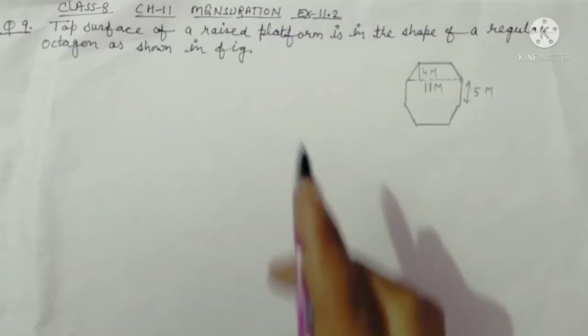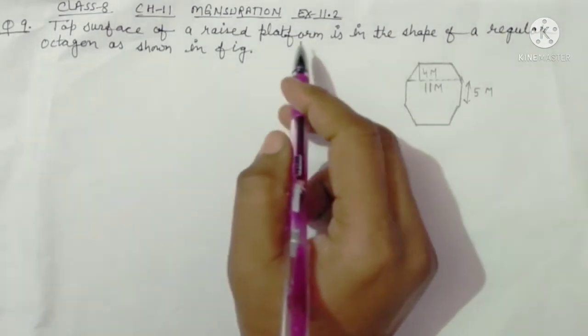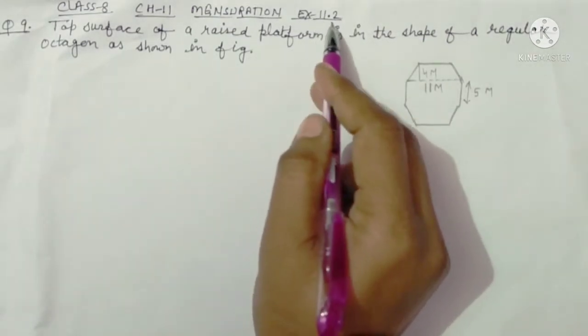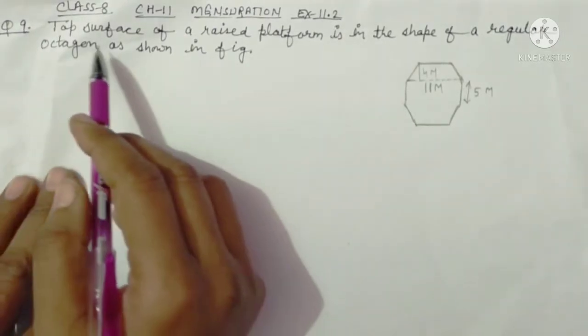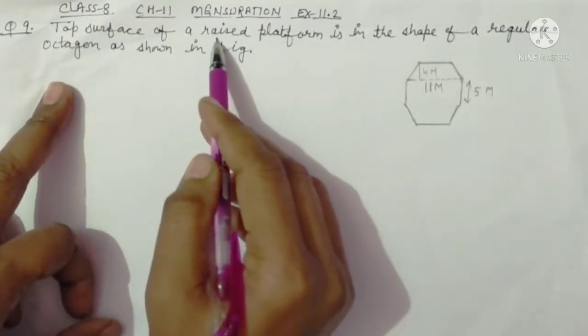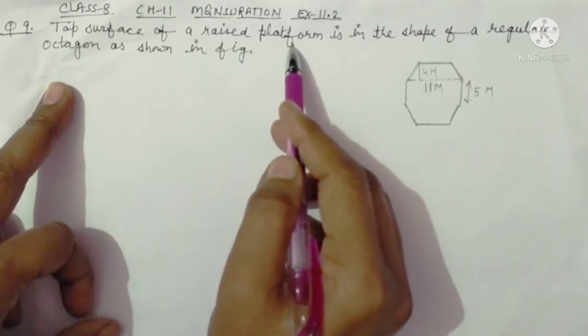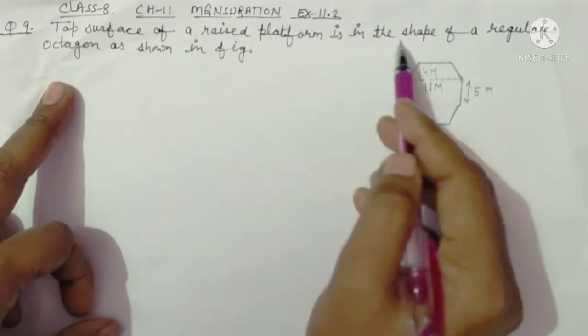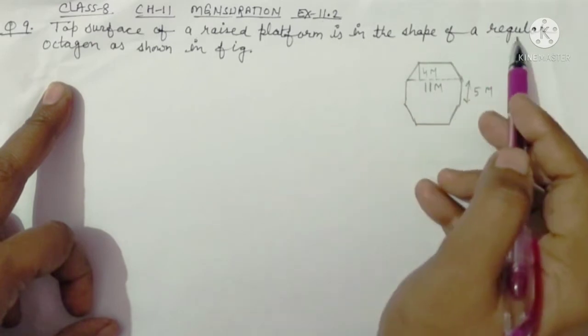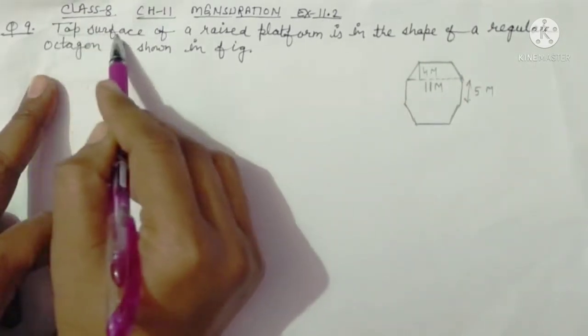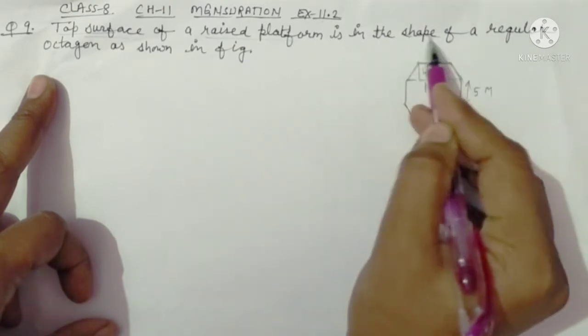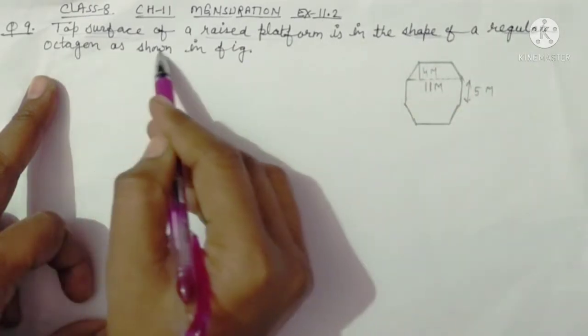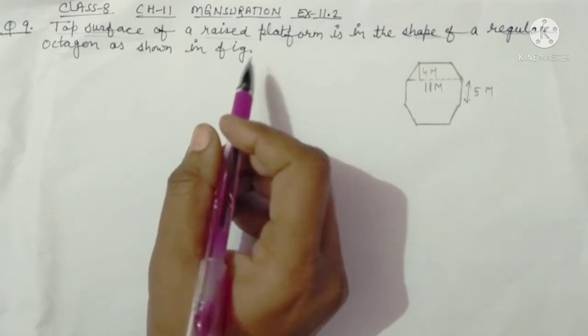This is Manoj Kumari, welcome to my YouTube channel Math Friend. Today we will do Exercise 11.2, Question Number 9. The top surface of a raised platform is in the shape of a regular octagon as shown in the figure.